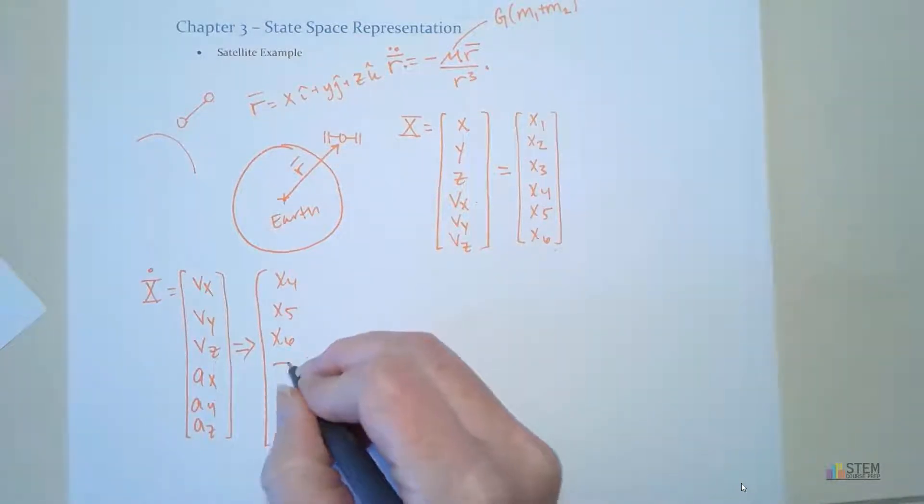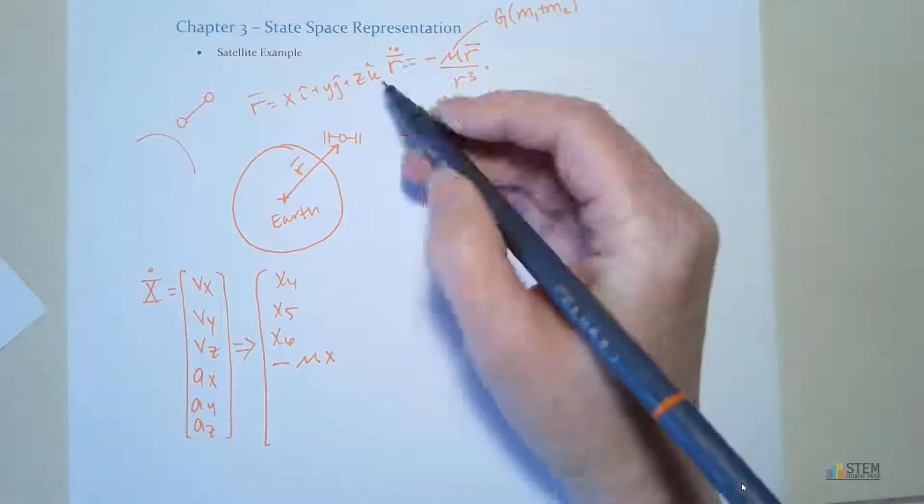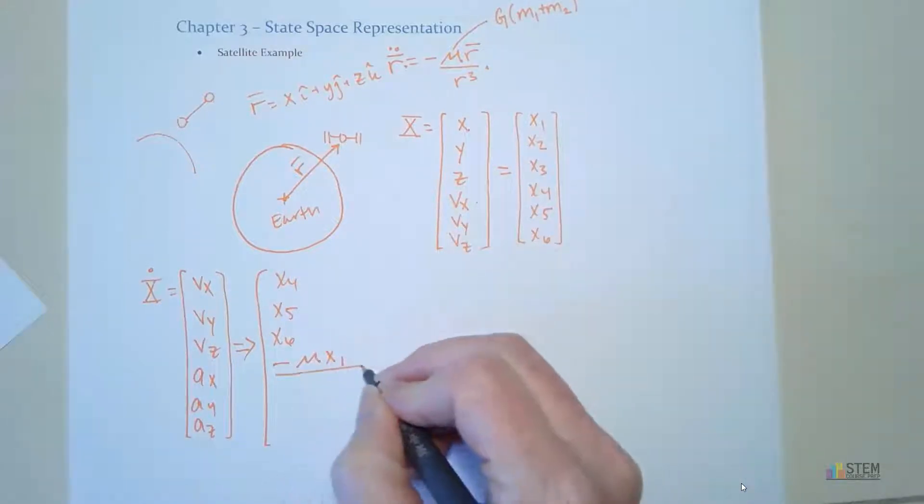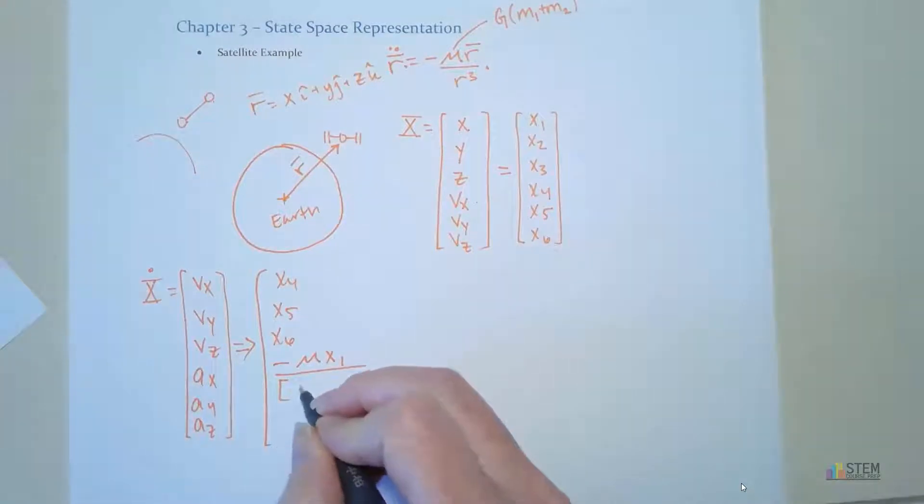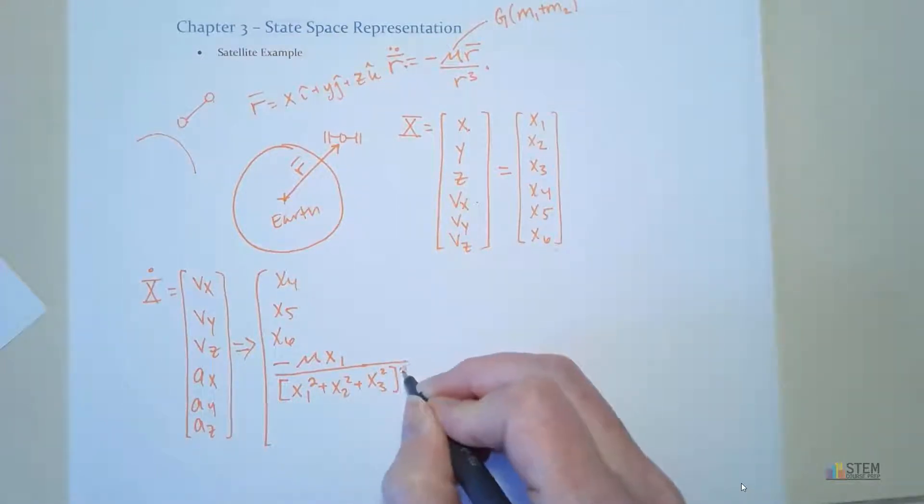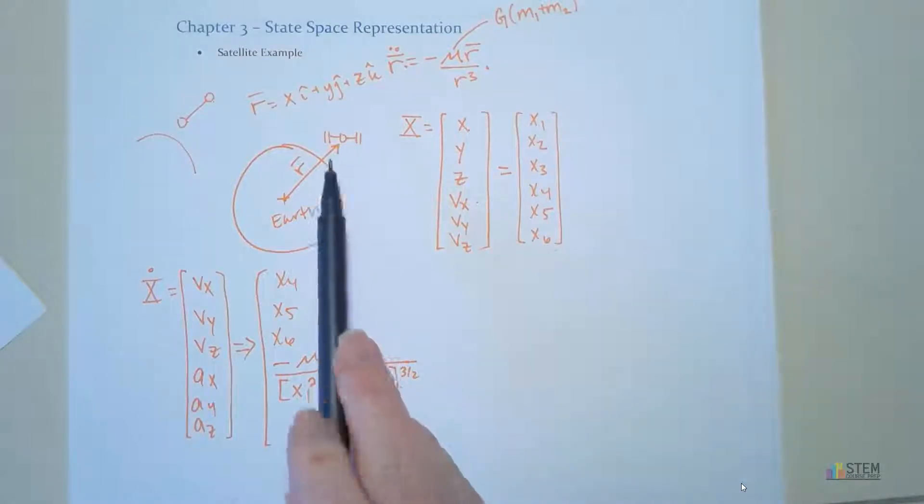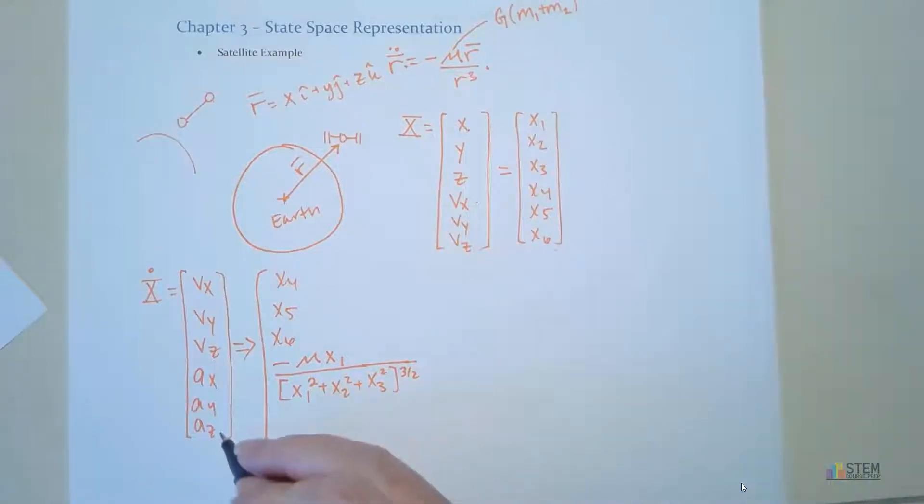And when you write it all out, if we go to AX, you're going to get negative mu times the X component of R, which we know is X1. And then you're going to put that over R cubed. Notice that's the magnitude of R. So if you write it out, you're going to have X1 squared plus X2 squared plus X3 squared, and raise that to the power of 3 over 2. So this is basically X squared plus Y squared plus Z squared. Because remember, that's what R was up here. And then you would repeat that for AY and AZ. So all that will change is this variable here. So we'll have negative mu over X2. Denominator is the same. So you can rewrite that. And finally, you get negative mu over X3. Like that.